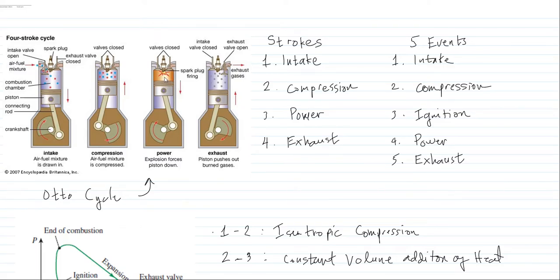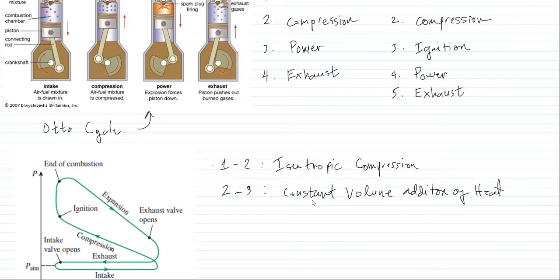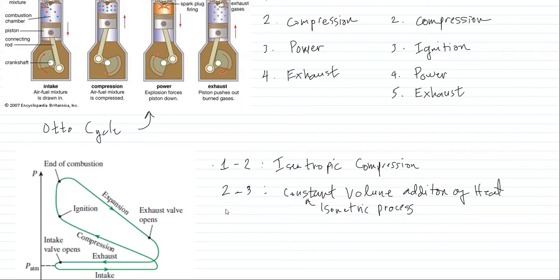Constant volume means this is an isometric process. So we have an isentropic compression first, and then an isometric process for the constant volume addition of heat.